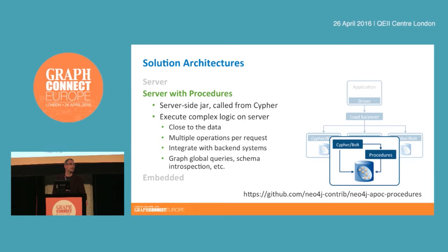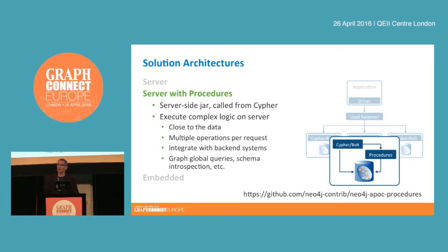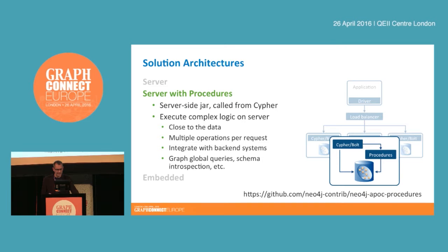This gives you the advantage of executing complex logic closer to the data — code that sits on the server and can get very close to the data. You can take advantage of lower-level APIs to talk to data on disk, execute multiple operations in the context of a single request, or actually communicate with other back-end servers before returning a response to the client. With the launch of 3.0 today, Michael Hunger has also released over 100 stored procedures at the GitHub URI shown here.